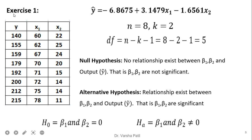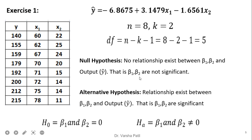Now let us start with the first problem. Y is the dependent variable, there are 8 total records, and two independent variables x1 and x2. The regression equation found from this table is: y-cap equals minus 6.8675 plus 3.1479 x1 minus 1.6561 x2. With n equal to 8 and k equal to 2, the degree of freedom is 8 minus 2 minus 1, which equals 5. To apply the F-test, we state the null hypothesis that beta 1 and beta 2 are not significant.